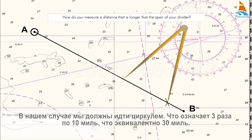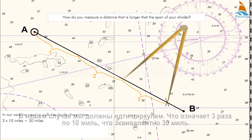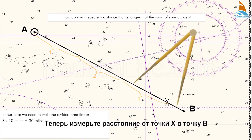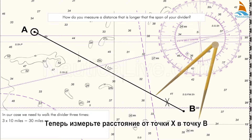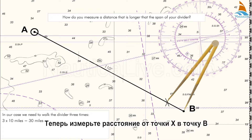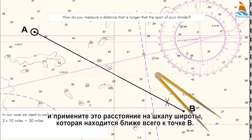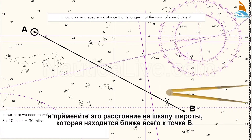In our case we need to walk the dividers three times. That makes 3 times 10 miles equaling 30 miles. Now measure the distance from point X to point B and apply this span on the latitude scale which is closest to point B.